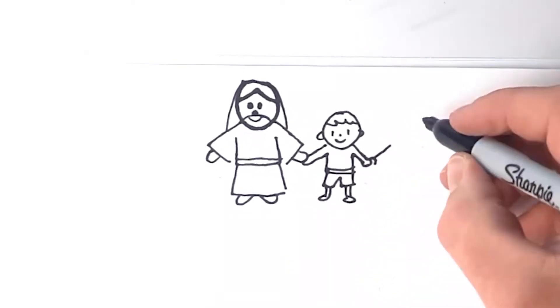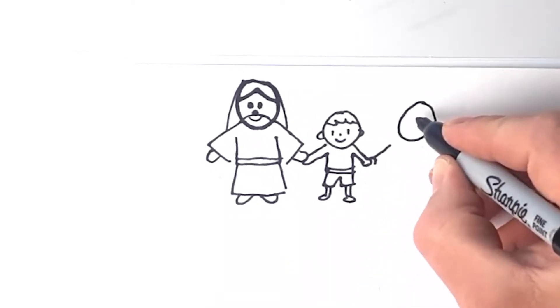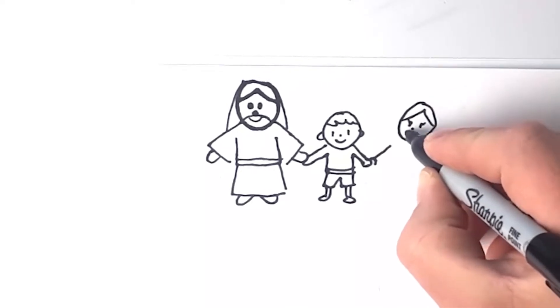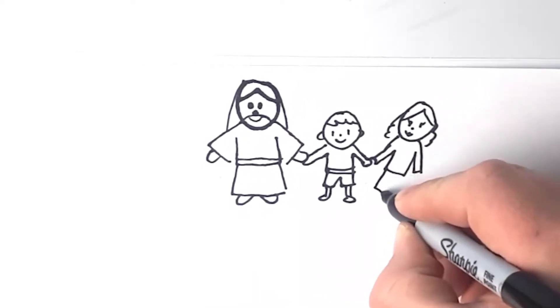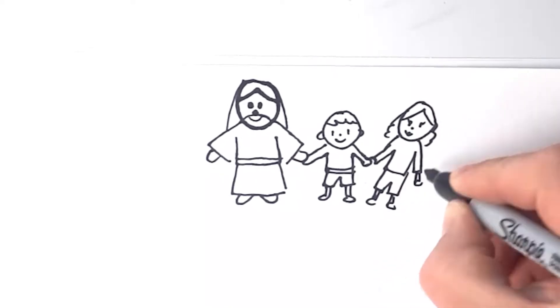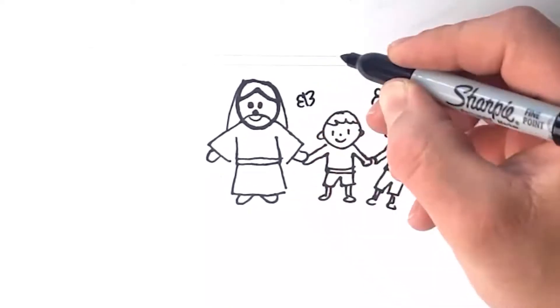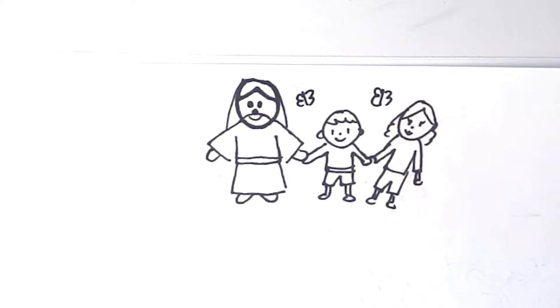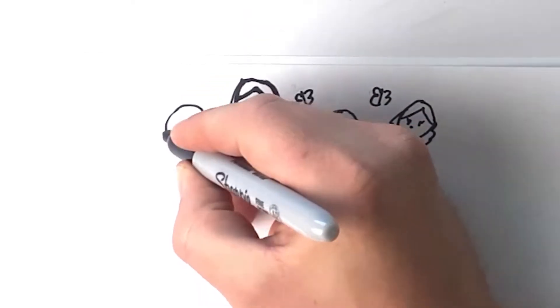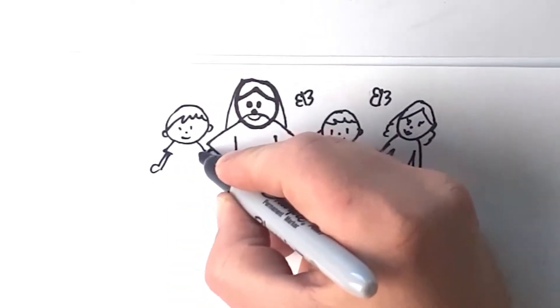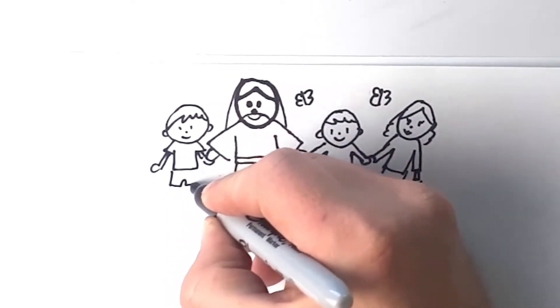So Jesus died so that we could go to heaven. Heaven is a place where we could live with Jesus and our families forever and be happy forever. Can you imagine living with Jesus, living with your mom and dad, being happy forever, having no sickness, no death?